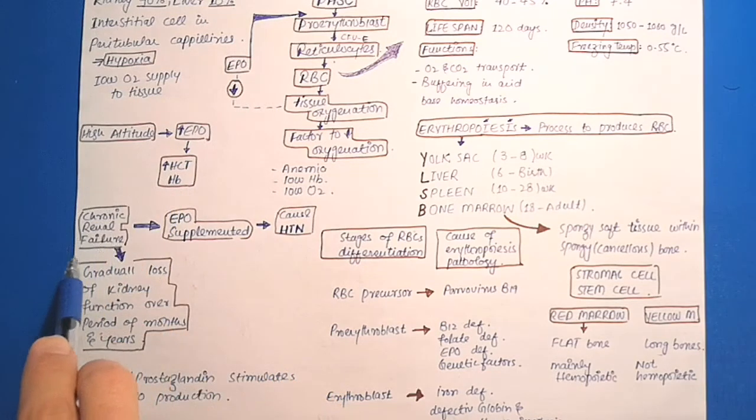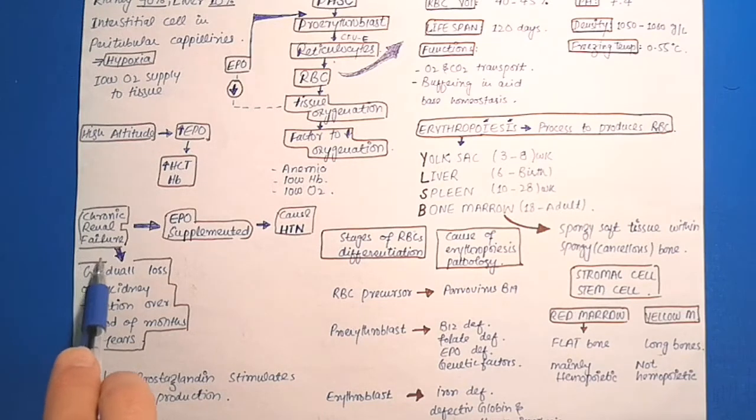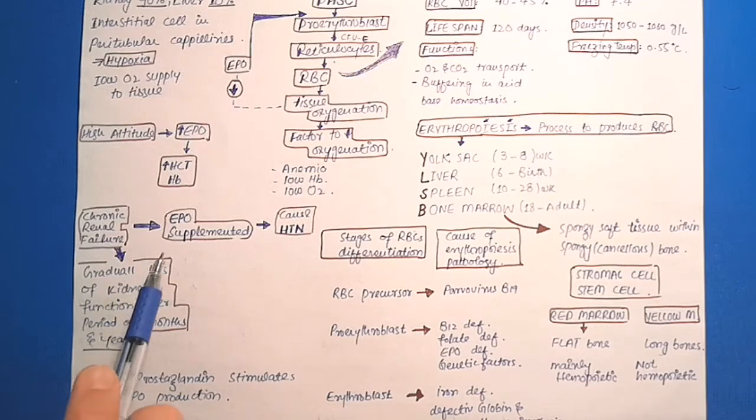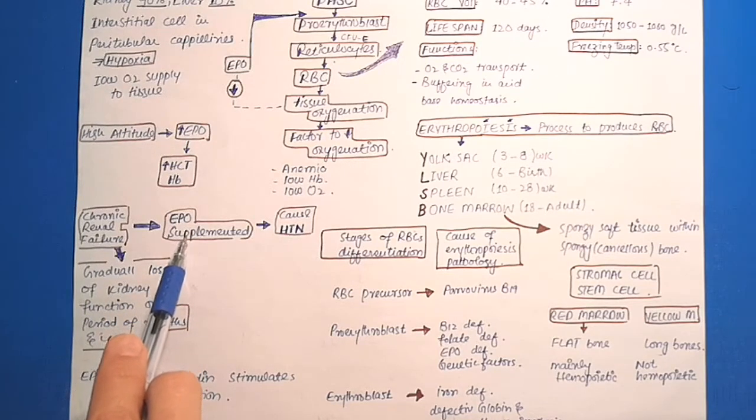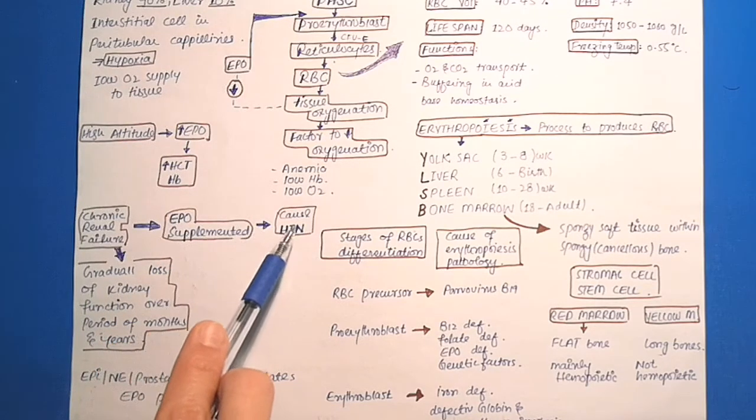But if a person has chronic renal failure, it means there is a gradual loss in kidney function over time. So we can give supplemented erythropoietin, but it also causes hypertension.